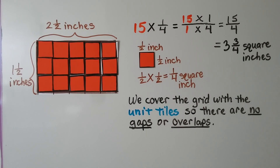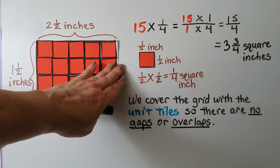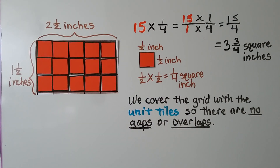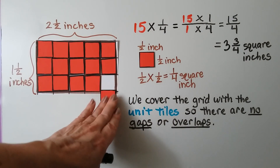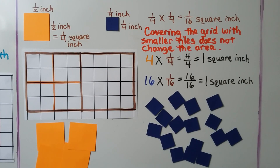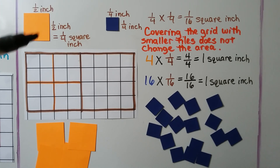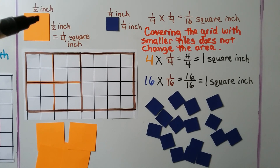We covered the grid with the unit tiles so there are no gaps or overlaps. We want to be very careful that we put one little square in each of the squares of the grid. So let's say that this orange square is a half inch on this side and a half inch on this side. We know length times width — one half times one half — will give us the area for this orange square. So the area for this orange square is one fourth square inch.